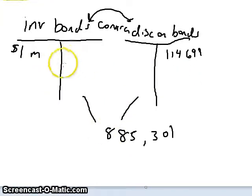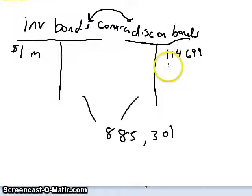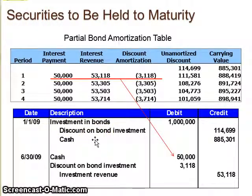You could have them shown netted together for the $885,301, or you could show it as investment in bonds $1,000,000 less the discount on the bonds $114,699. The January 1st entry is the one just journalized — I left out the cash piece since I'm just trying to show you the bond piece of it.